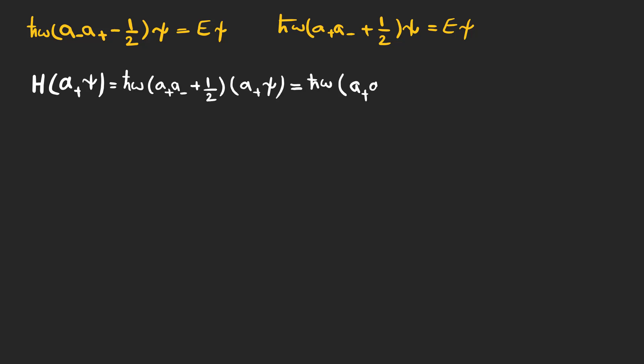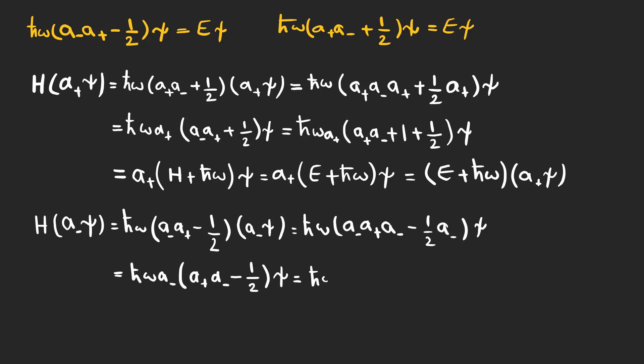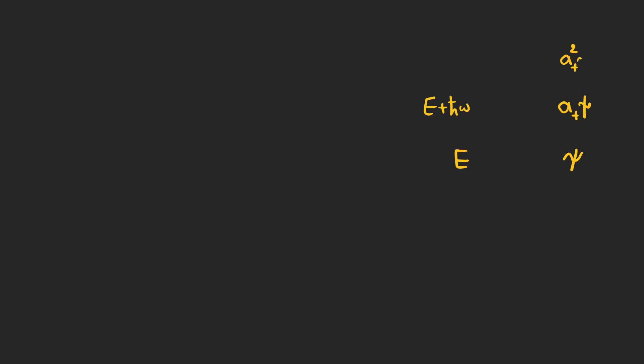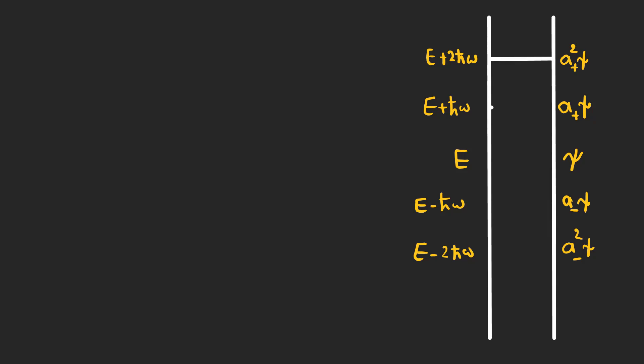The time-independent equation can be written in terms of a plus and a minus. And we see that a plus psi satisfies the Schrodinger equation with energy e plus h-bar omega. And a minus psi is a solution with energy e minus h-bar omega. If we have psi as an answer to the time-independent Schrodinger equation with energy e, we can find other solutions using a plus and a minus operators, which are called ladder operators. A plus being the raising operator and a minus the lowering one.